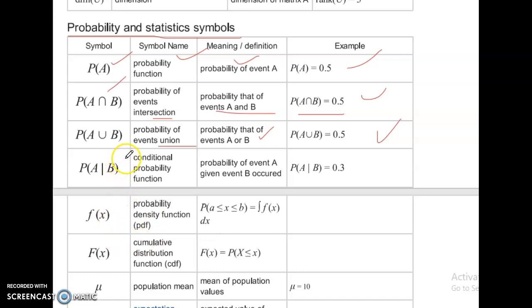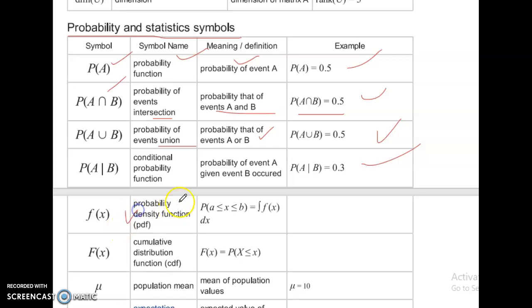P of A bar B. That is conditional probability function. Probability of event A given event B occurred. P of A given B equal to 0.3.